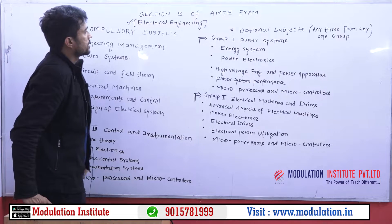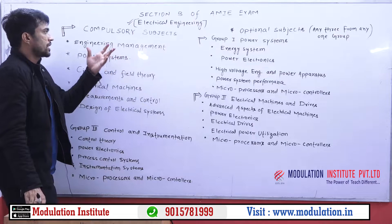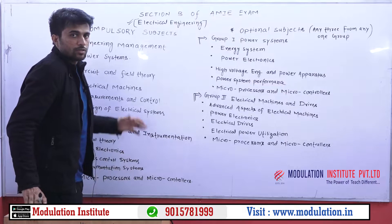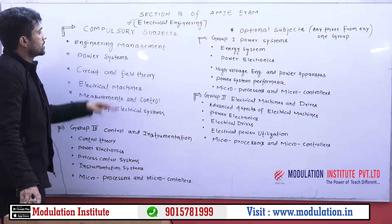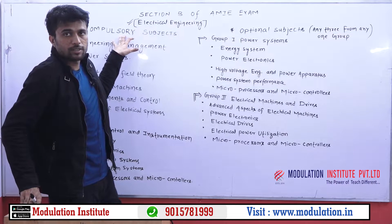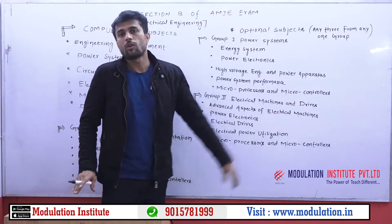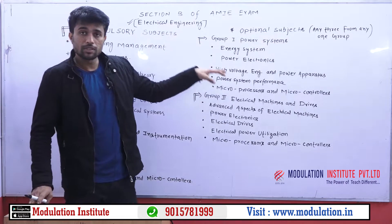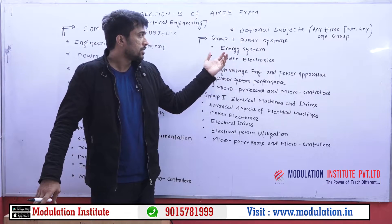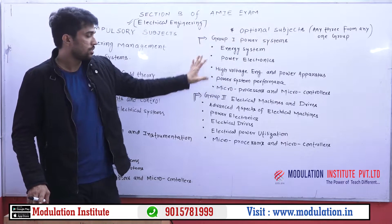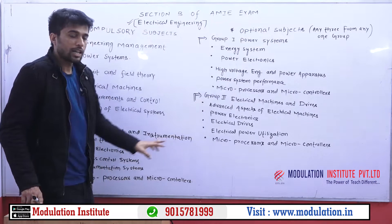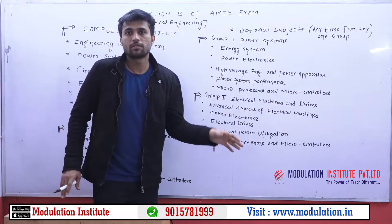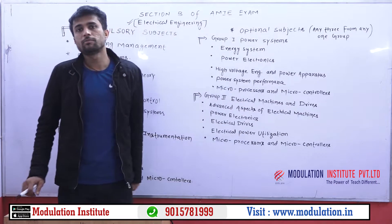As you can see here, the whole syllabus of electrical engineering is mainly divided into two categories. The first one is compulsory subjects and the second one is optional subjects. Within the optional subjects, it is further divided into three groups: Group 1, Group 2, and Group 3. We will come to that part later. First, we will discuss the compulsory subjects.